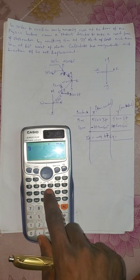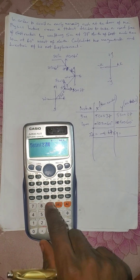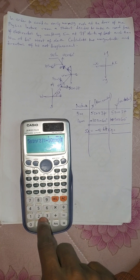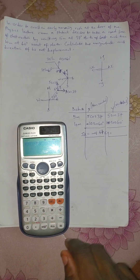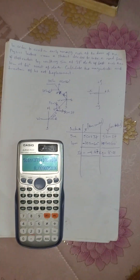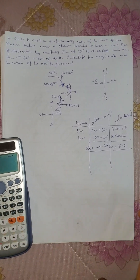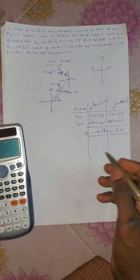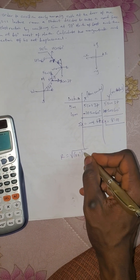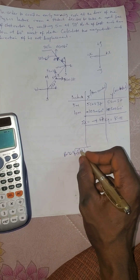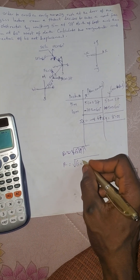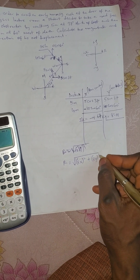For summation y: 5 sine 37 plus 10 cos 60. This gives 8.01. Now let us find the resultant of this vector. We have R equal to square root of summation x squared plus summation y squared.